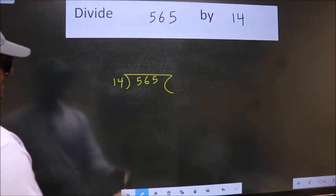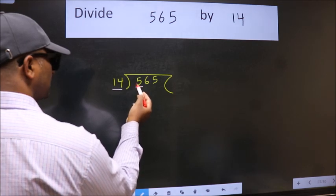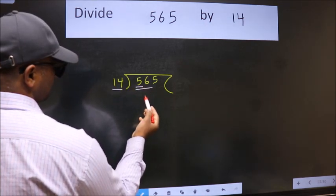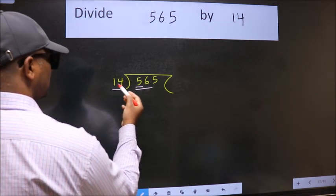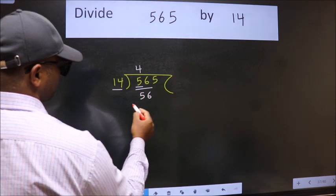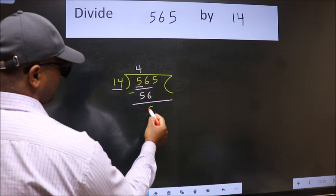Next, here we have 5, here 14. 5 is smaller than 14, so we should take two numbers, 56. When do we get 56 in 14 table? 14 fours 56. Now we should subtract. We get 0.